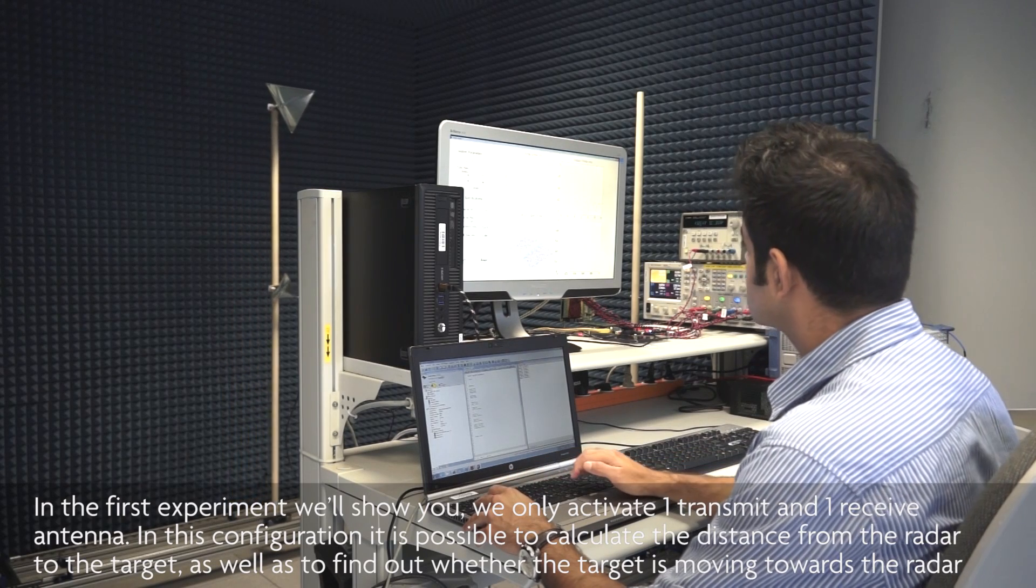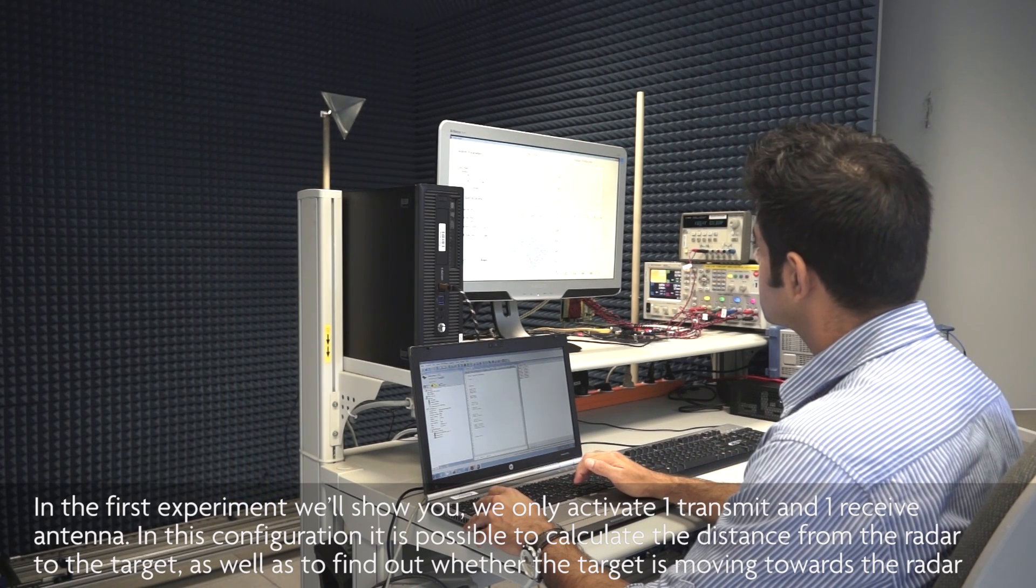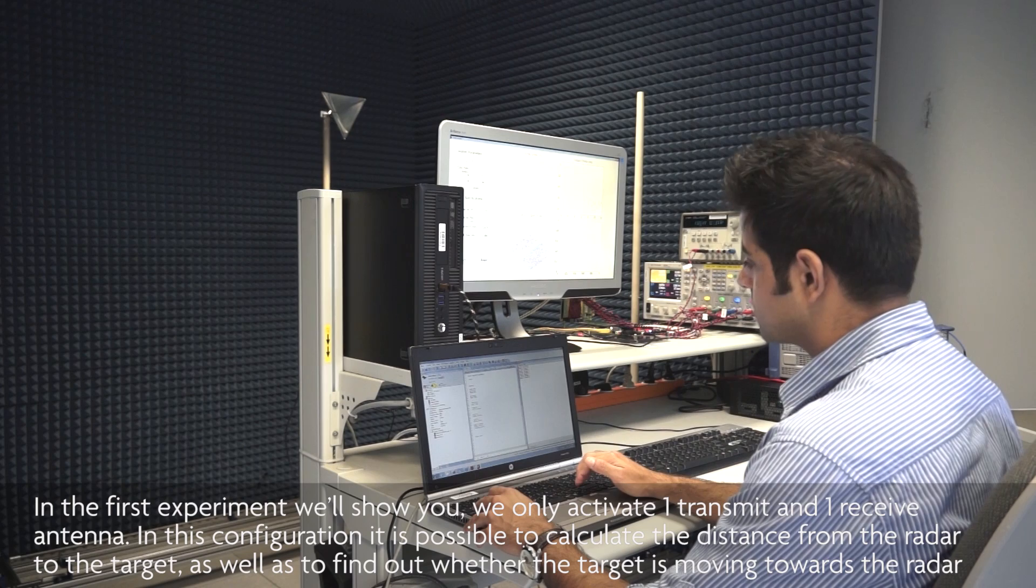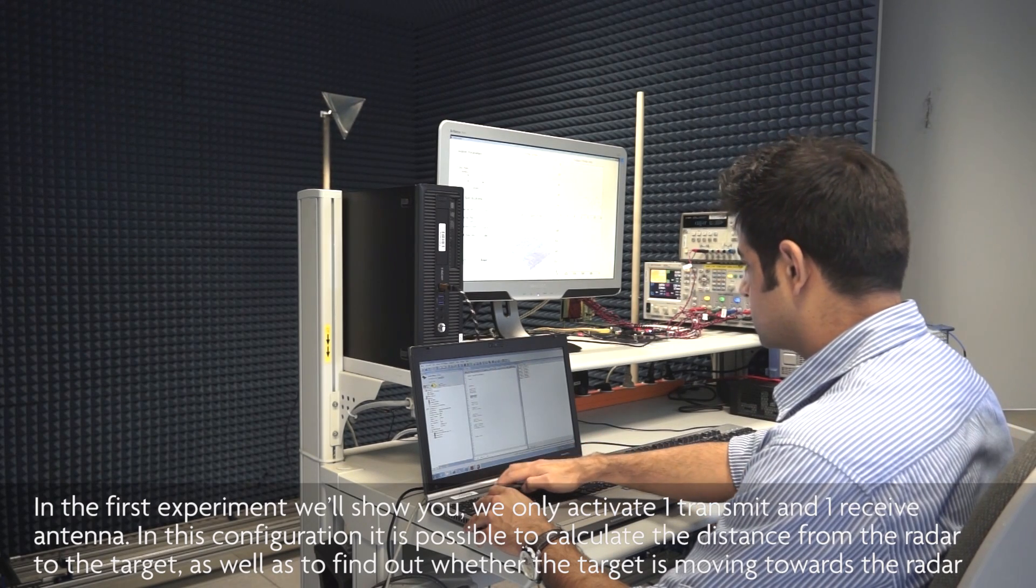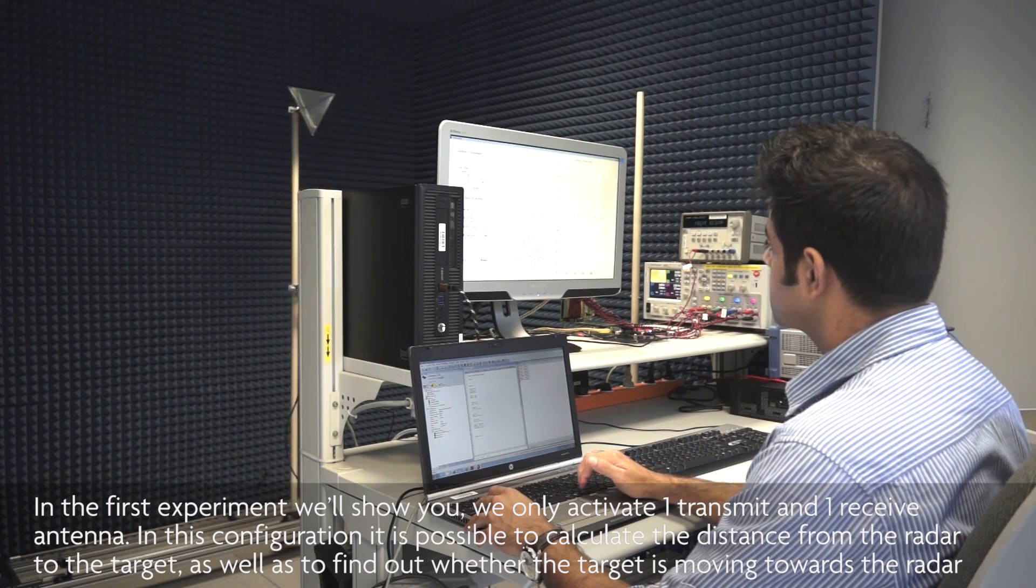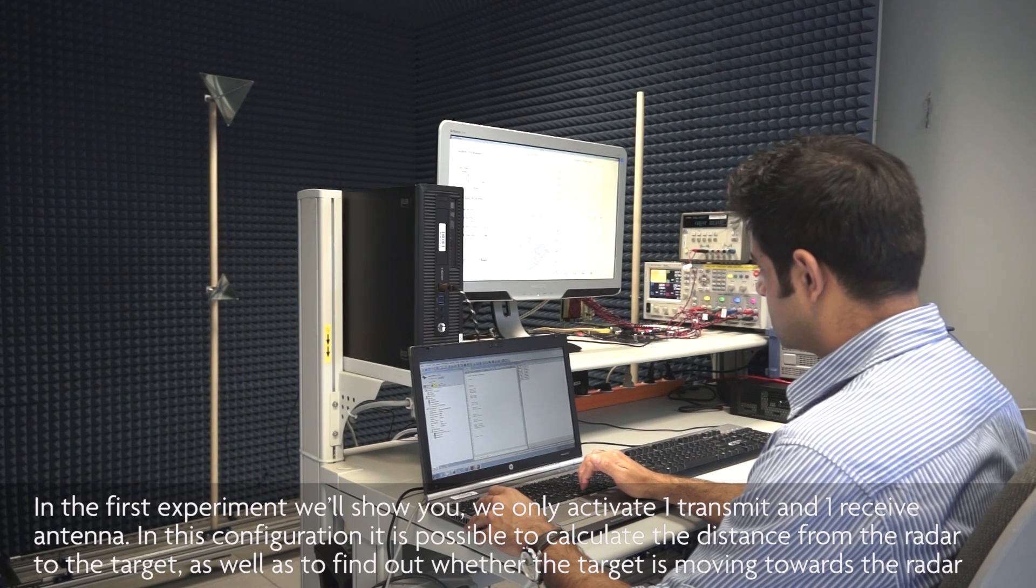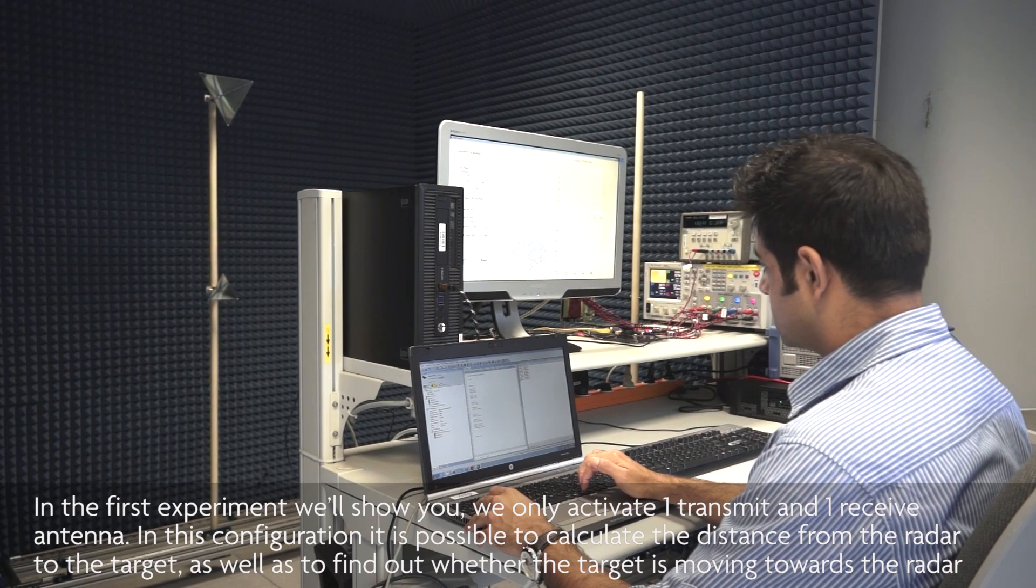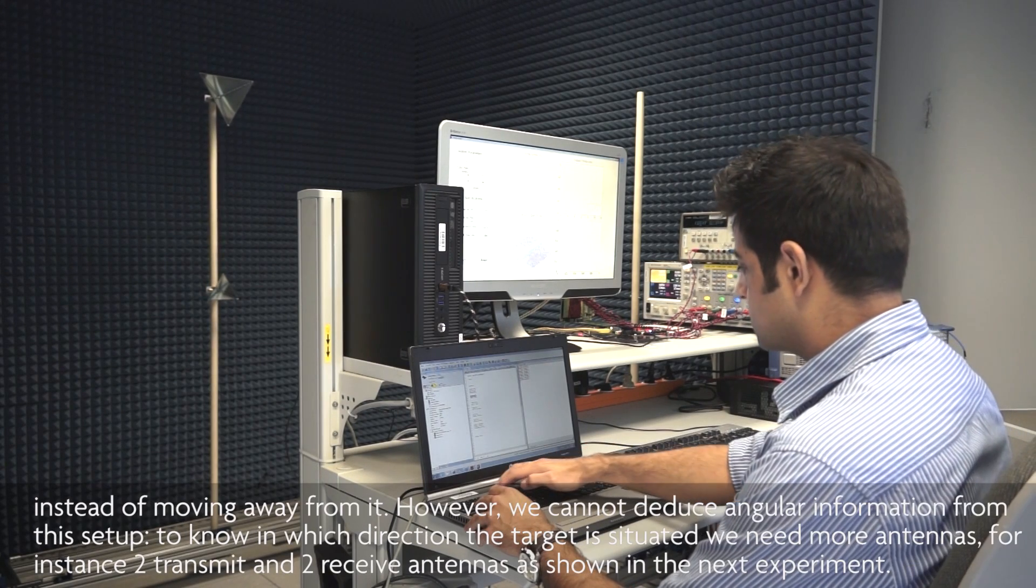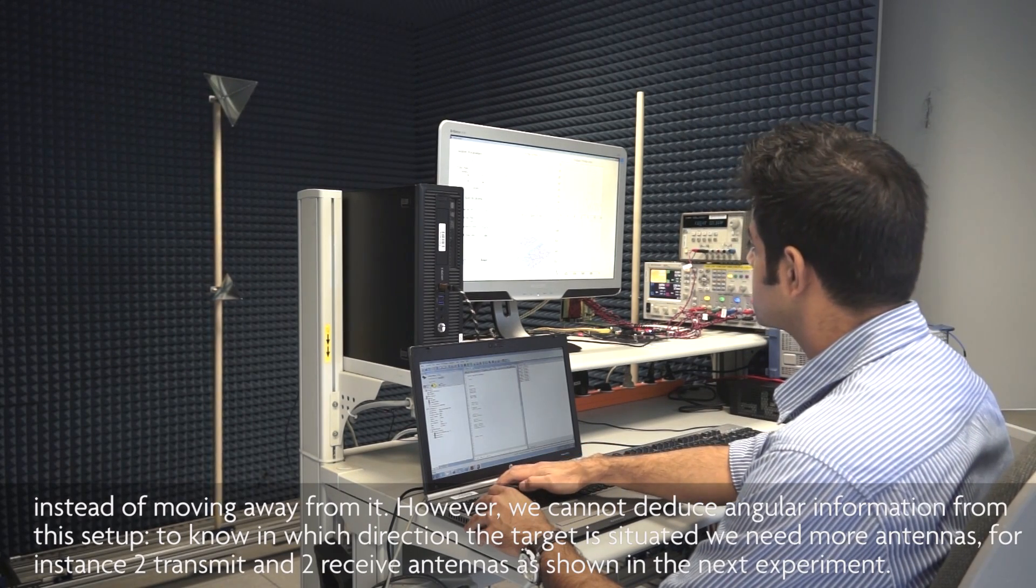In the first experiment we'll show you, we only activate one transmit and one receive antenna. In this configuration, it's possible to calculate the distance from the radar to the target, as well as to find out whether the target is moving towards the radar, instead of moving away from it.